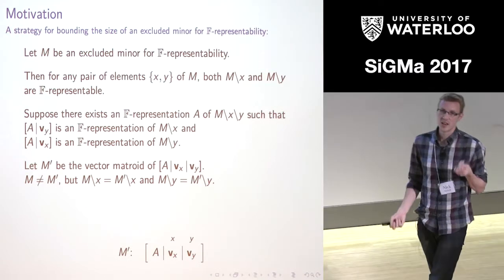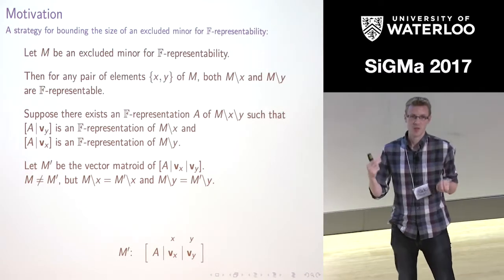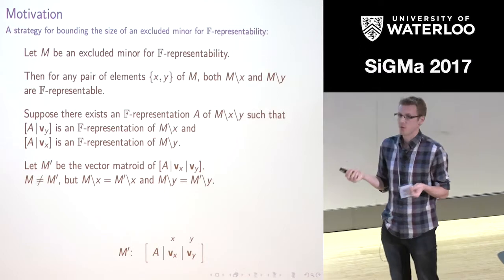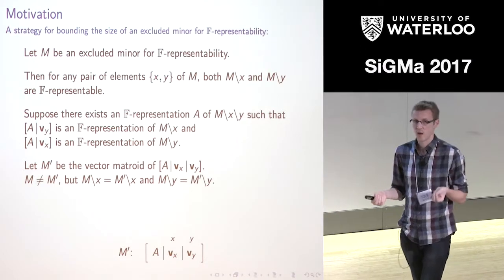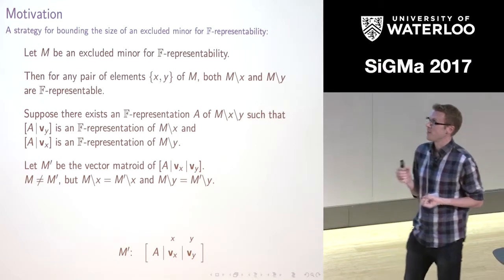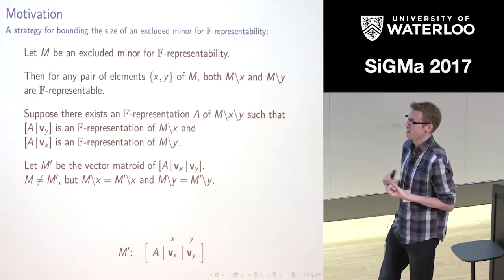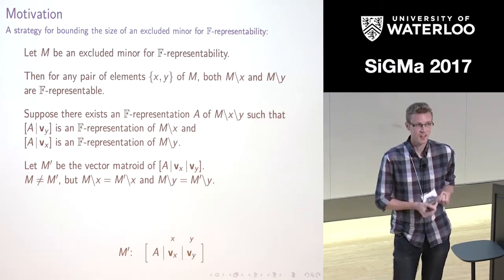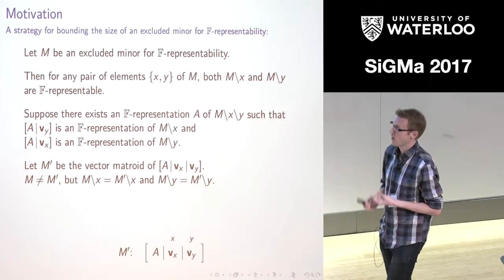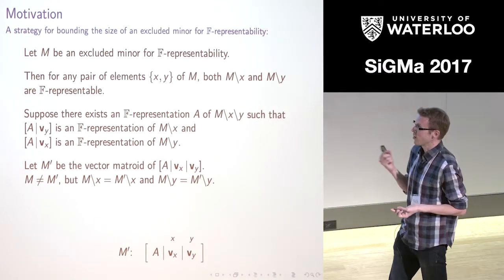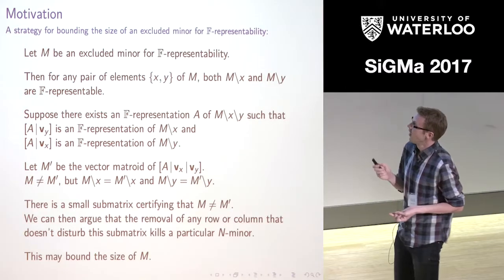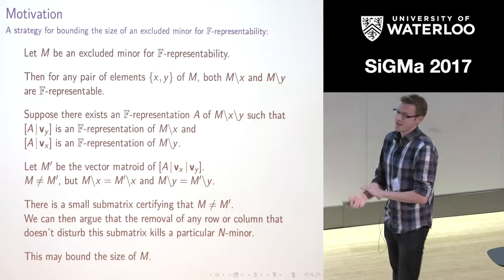In particular, if you were to delete X from both M and the new matroid M prime, you get the same thing. Or if you were to delete Y from both, you get the same thing. But crucially, we don't have the same matroid. M, remember, was an excluded minor for F-representability, whereas M prime evidently has a representation — it's F-representable.